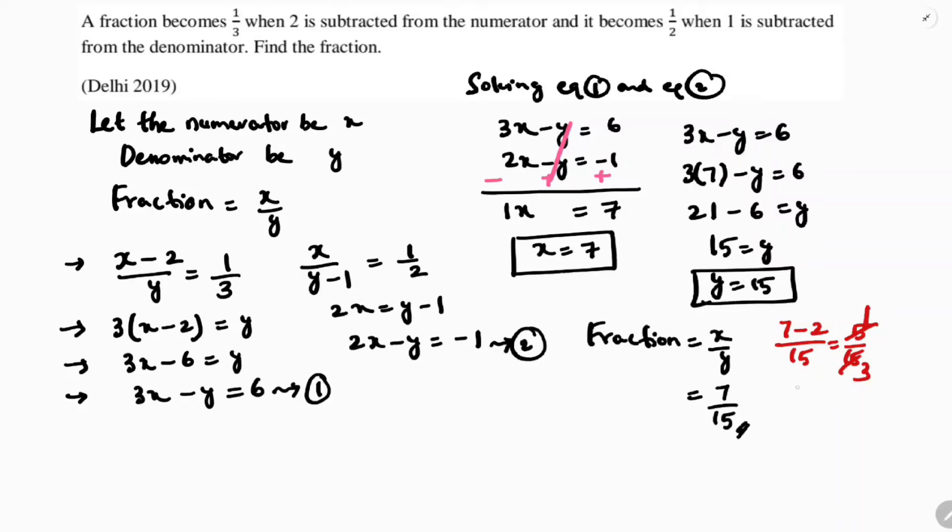If 1 is subtracted from denominator, 7 by 15 minus 1, which is 7 by 14, equals 1 by 2. Therefore, the final answer, the fraction is 7 by 15.